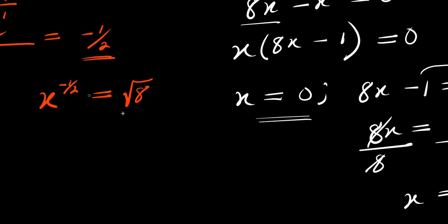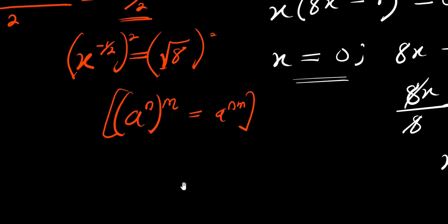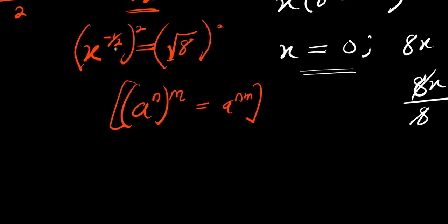Now to solve for x, I can eliminate this square root by taking squares — raise both sides to the power of 2. Remember, a to the power of n, raised to the power of m, equals a to the power of n times m. So I multiply: x to the power of negative 1 times 2, which is negative 2 over 2.